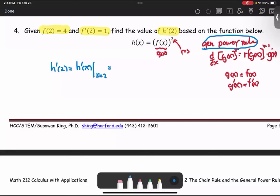The power r, r is 3 times the function g. In this case, it's the function f raised to the power 3 minus 1 and multiply by the derivative of the function, which is the function f. And we evaluate at x equals 2.